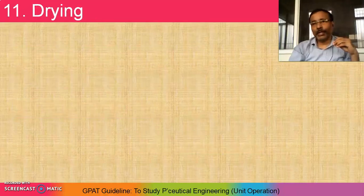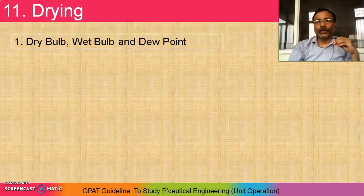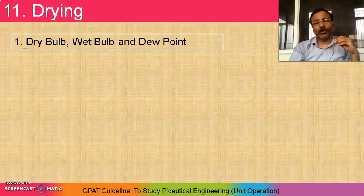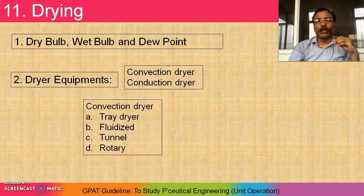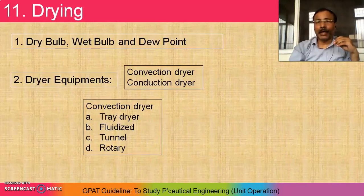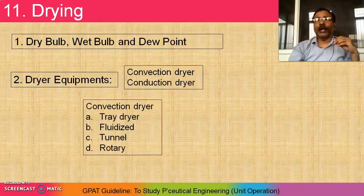The last and important topic is drying. Check out the concepts like dry bulb, wet bulb, and dew point temperature. You also have to study humidity. Dryer equipment is based on two types: convection and conduction. Convection dryer examples include tray dryer, fluidized dryer, tunnel dryer, and rotary dryer. Check out the special application of each — where they are used and in what condition they are used.